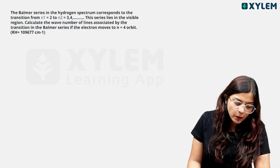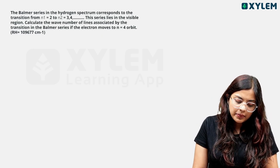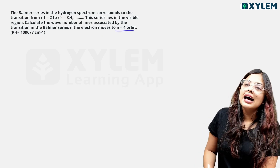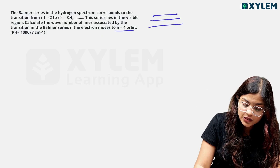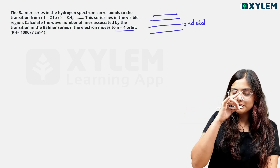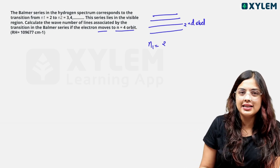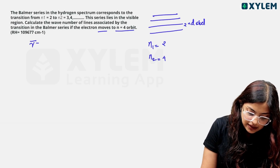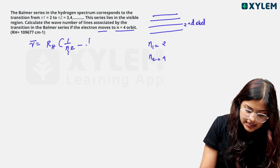The Balmer series in the hydrogen spectrum corresponds to transitions from n1 equals 2 to n2 equals 3, 4, etc. This series lies in the visible region. Calculate the wave number of lines associated with the transition in the Balmer series if the electron moves to n1 equals the 4th orbit. Using the formula: wave number equals R_H times (1/n1² minus 1/n2²).